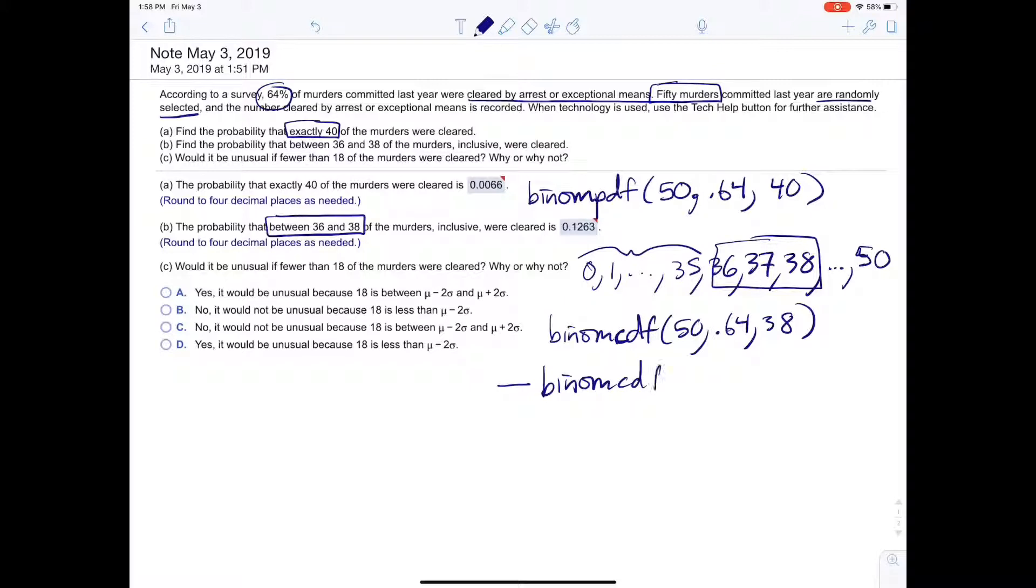So minus binomial 50, 0.64, 35. So that's how we do part B. So that would be for part B. This is part A.